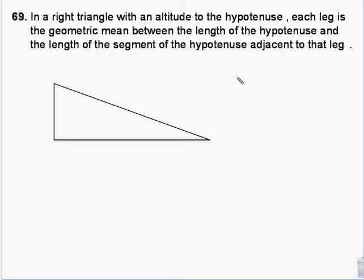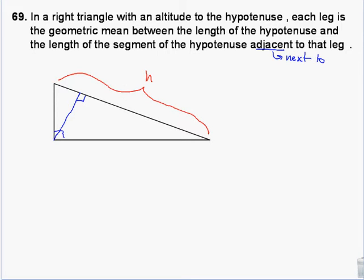Again, in a right triangle with an altitude to the hypotenuse — same setup — each leg is the geometric mean between the length of the hypotenuse and the length of the segment adjacent to that leg. Adjacent means next to. So if I label these: the hypotenuse is H, the altitude is A, I'll keep those segment pieces X and Y the same as before so that we're still familiar.